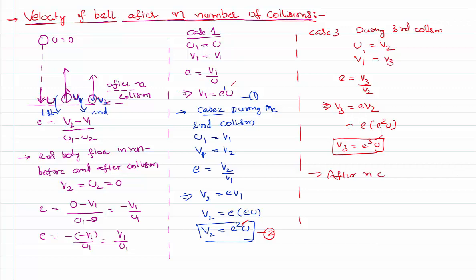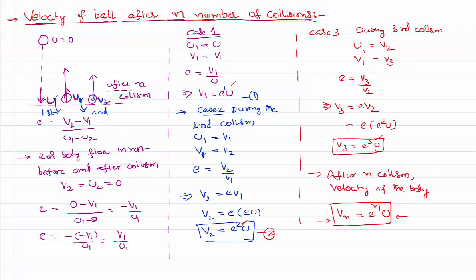After N collisions, the velocity of the body is VN = E^N · U, where U is the initial velocity with which the body strikes the floor just before the first collision and N is the number of collisions. This is the expression for the final velocity of the body after N number of collisions.